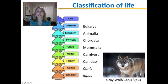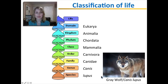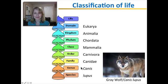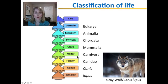Let's look at how this applies to a specific organism: the gray wolf. Its Latin name is Canis lupus — lupus is the species name. It belongs to the genus Canis, which also includes dogs and jackals. That genus belongs to the bigger grouping, the family Canidae, which also includes foxes and coyotes. The family belongs to the even bigger grouping of the order Carnivora.